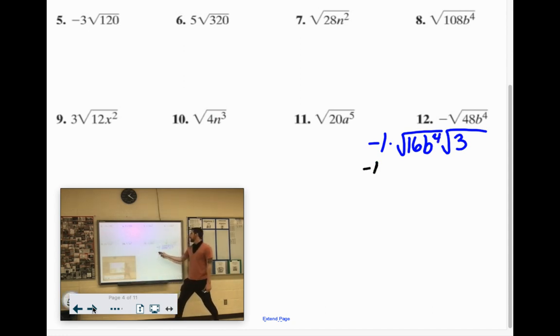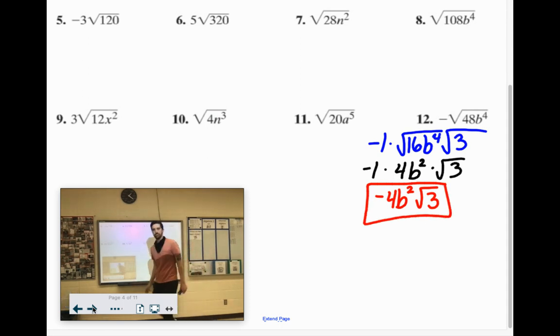Square root of 16 is 4. Square root of b⁴ would be b². And then we can multiply that by -1 to get -4b²√3. Good luck on the rest of these. You got this.